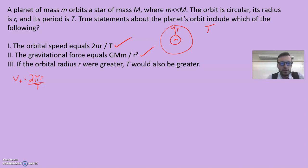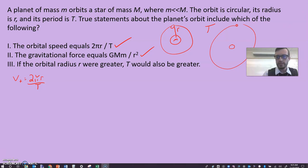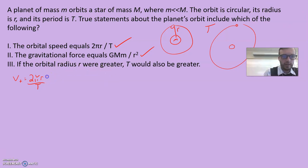How about the gravitational force equals GMm over r²? Yeah, sure. How about this one? If the orbital radius were greater, T would also be greater. So basically what this is saying is if you are orbiting further away, would the T also be greater? This could turn into a really long answer, but we'll try to keep it short.